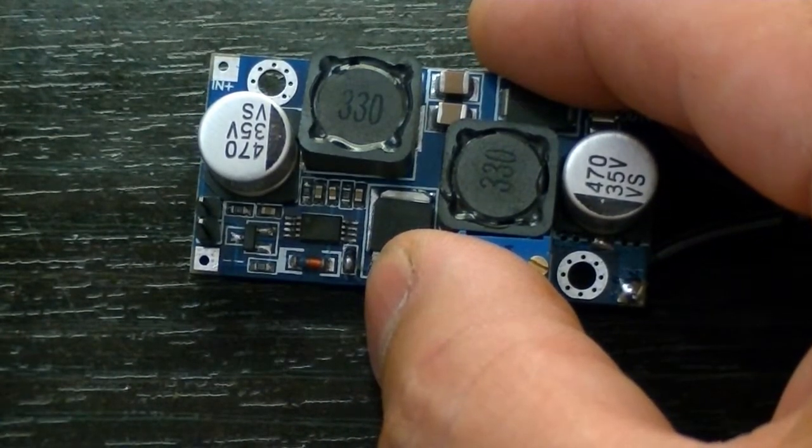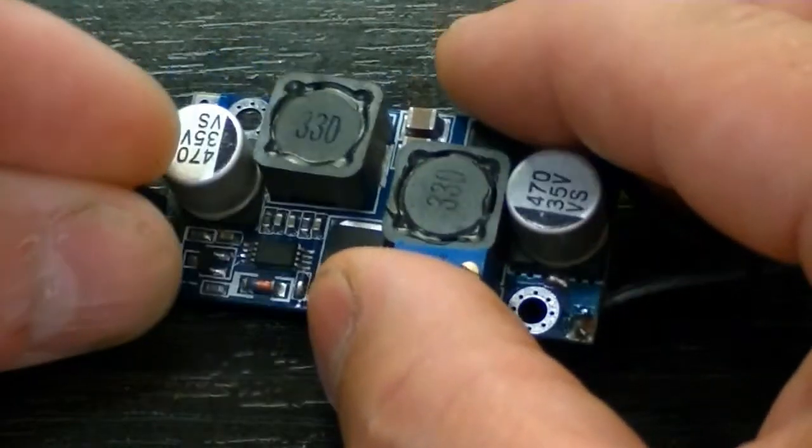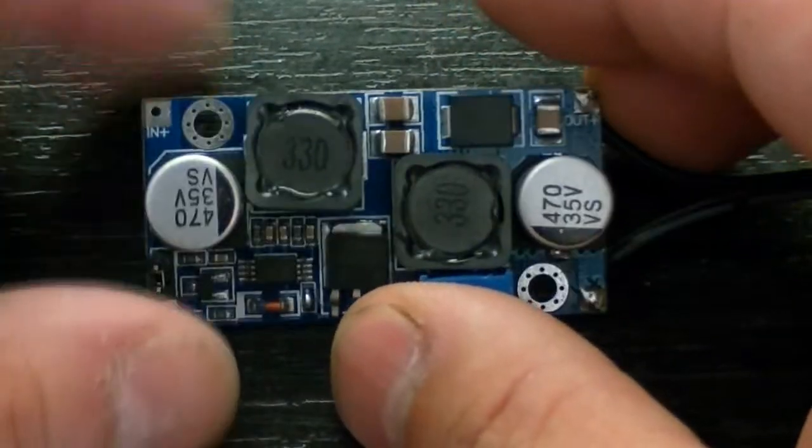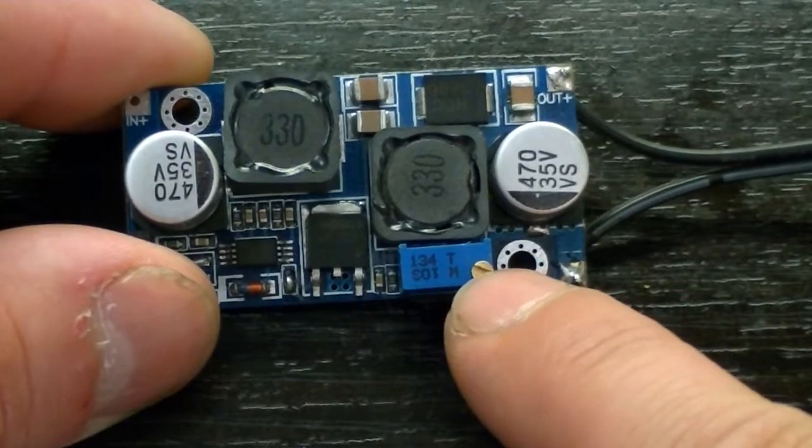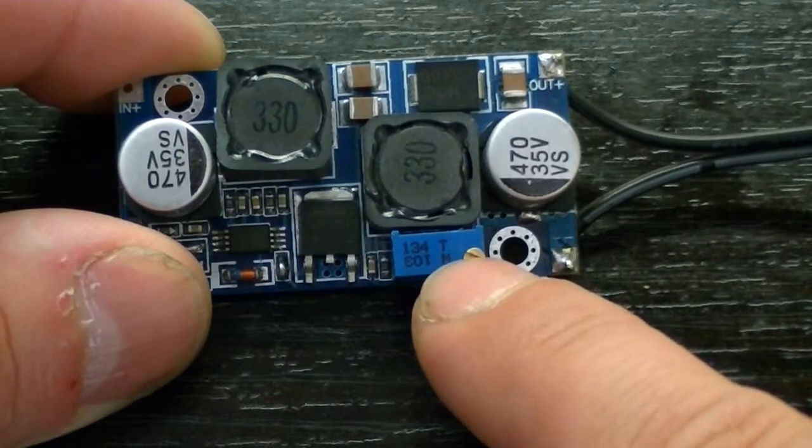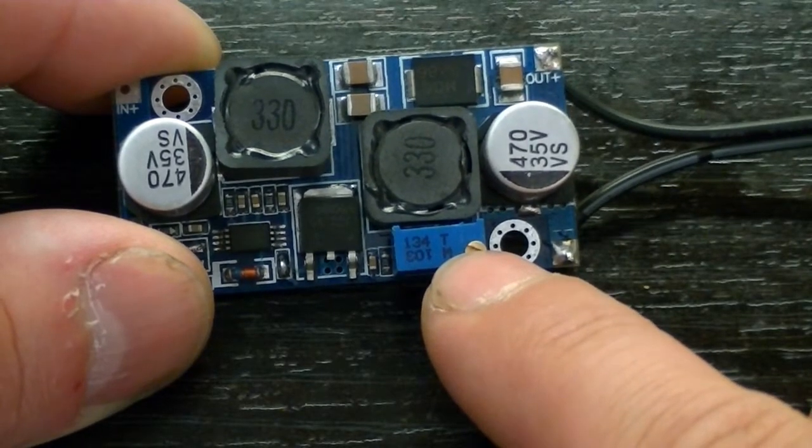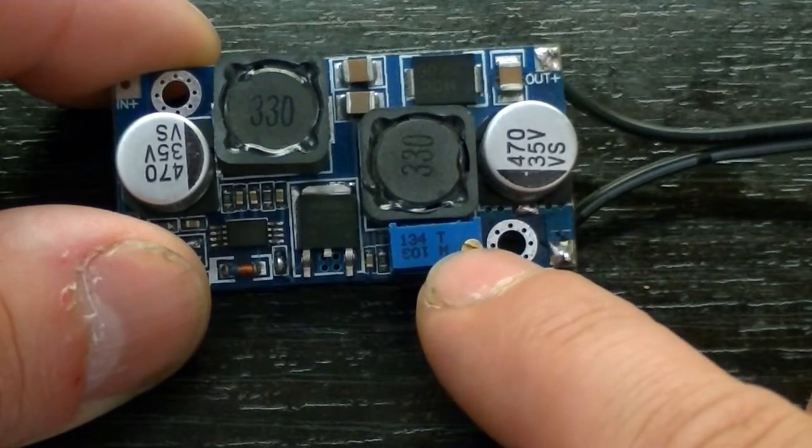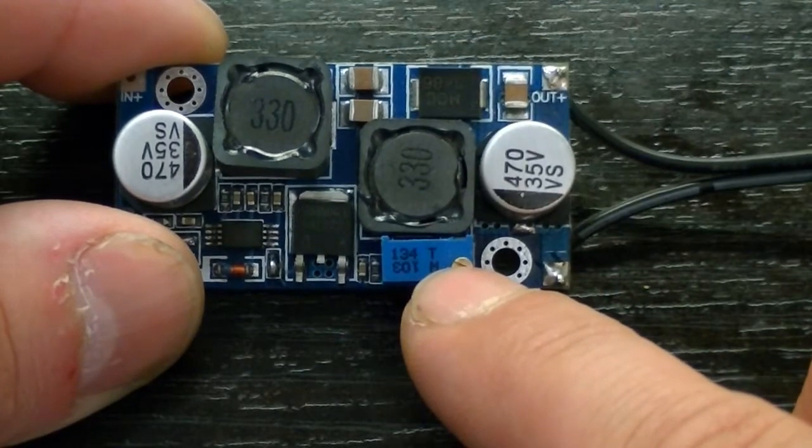And you have a trim pot here for your output voltage to change it from a half volt to 30 volts. I'm guessing it's probably about a 10-turn, so you can get really fine adjustment on this one. So let me set up the bench here first and we'll demo what I'm thinking of doing with it, then we'll go outside and actually try the solar capability.